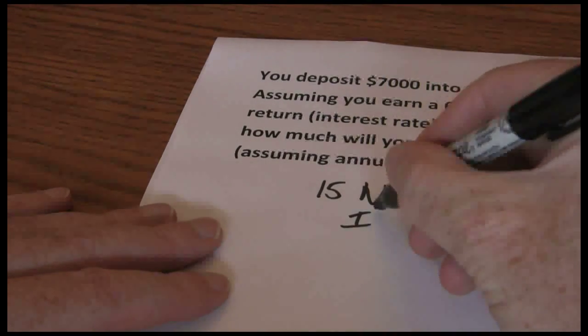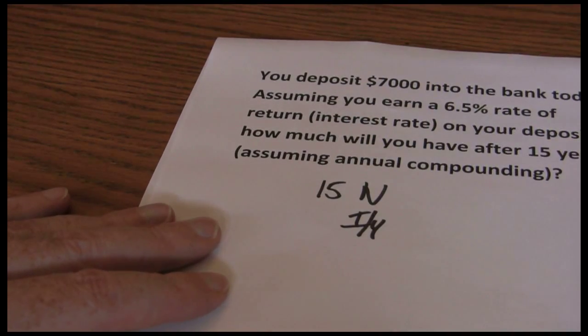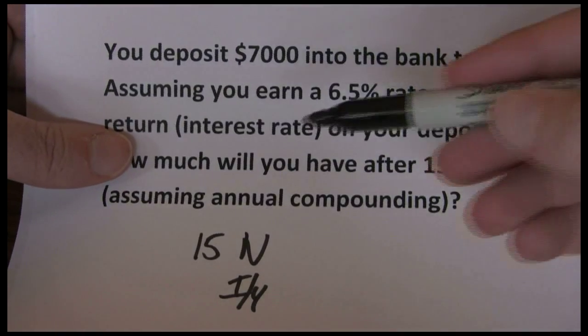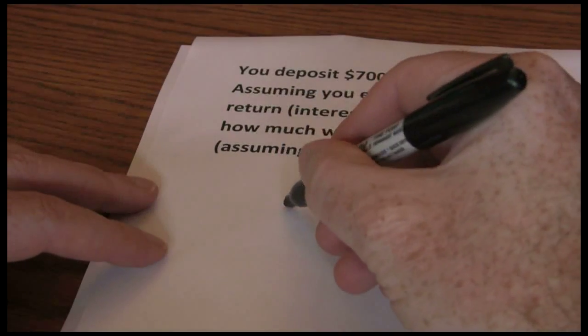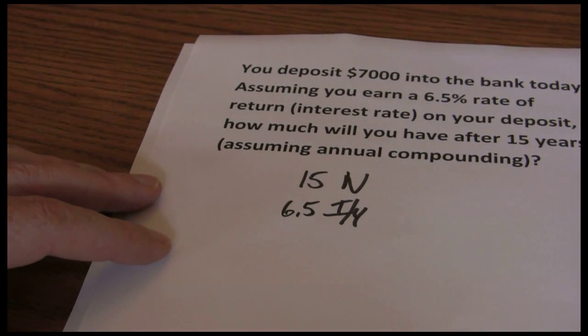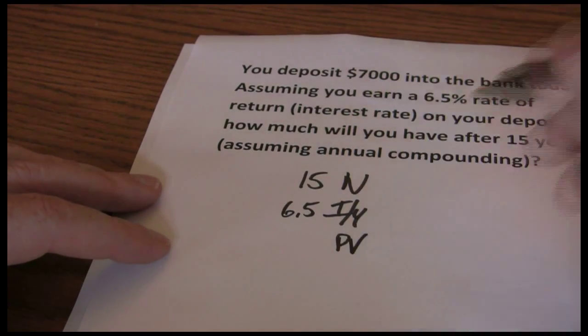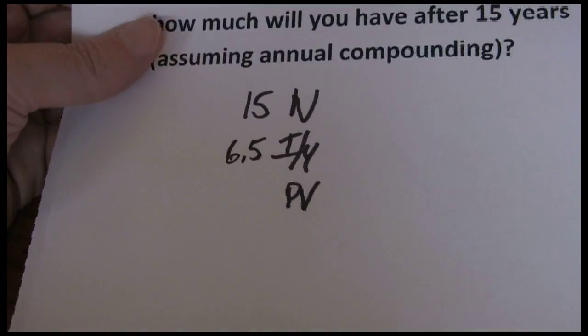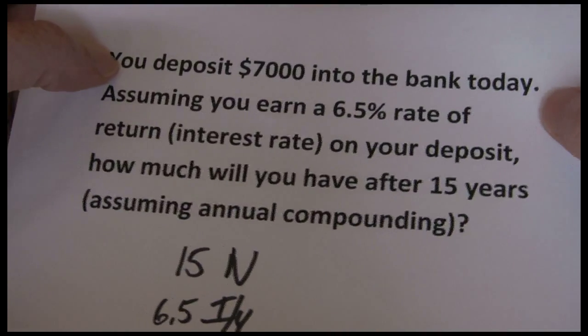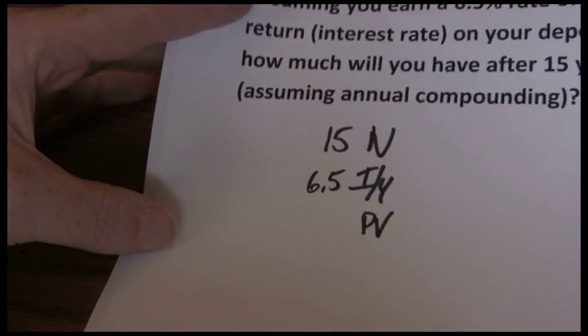Next we have our interest rate, our I/Y. And here we have a 6.5% rate of return or interest rate. And next we have our present value. Present value is the $7,000 that we deposit into the bank today. Present value is our starting point.